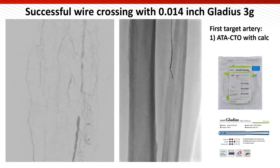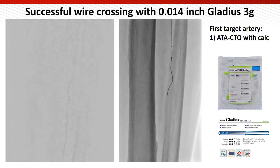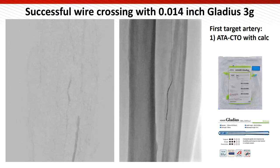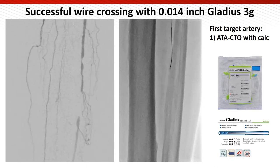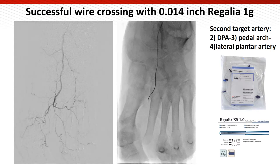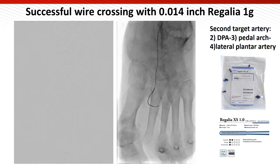As mentioned previously, Gladius 3g wire, which has a 3g tip load with pre-shape, is used for penetrating the short segment CTO with calcification. This Gladius 3g wire has 1-to-1 torquability. After successful BTK crossing, we commonly switch to the Regalia wire at the below-the-ankle region.